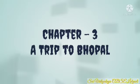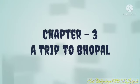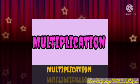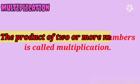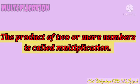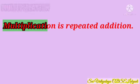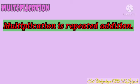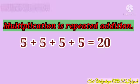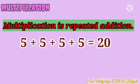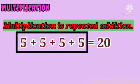Hello children, good morning. Today we will see Chapter 3: A Trip to Bhopal. In that, let's learn some interesting concepts in multiplication. The product of two or more numbers is called multiplication. We can also say multiplication is repeated addition. For example, 5 plus 5 plus 5 plus 5 is equal to 20 — here we added 5 repeatedly 4 times.